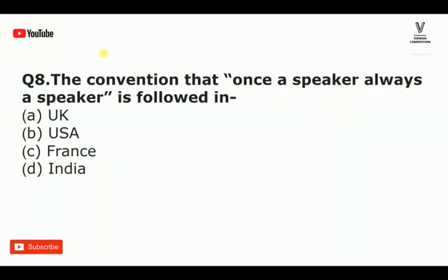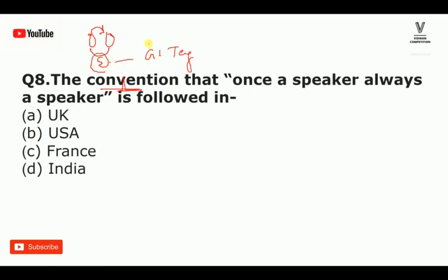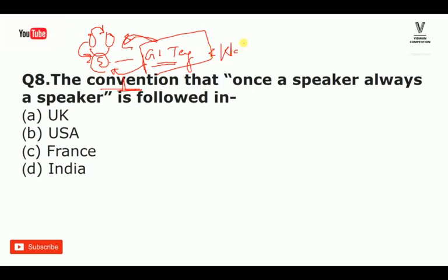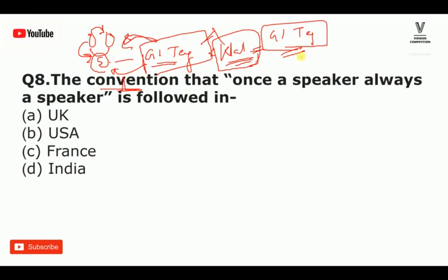The next question is about convention. Convention means an established practice. For example, the GI Tag — West Bengal and Odisha had a dispute over Rosogolla. The GI Tag works like a patent. Odisha recently got a GI Tag. The convention that one speaker is always a speaker is followed in any country.